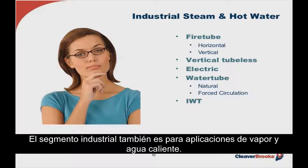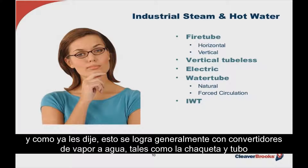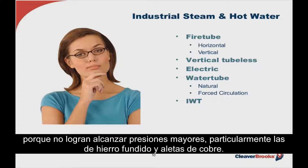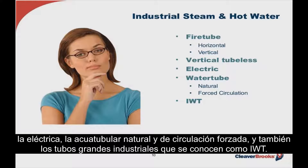The industrial segment is also steam and hot water applications, with the emphasis on process steam, though comfort heating can be included — normally accomplished with a steam-to-water converter such as a shell and tube heater or a plate and frame heat exchanger. Border types are somewhat similar to commercial products, though cast iron and copper fin boilers have been eliminated due to their inability to achieve higher design pressure. In the industrial segment we have fire tube boilers, the vertical tubeless boiler, electric, water tube both natural and forced circulation, and large industrial water tubes, also known as IWTs.